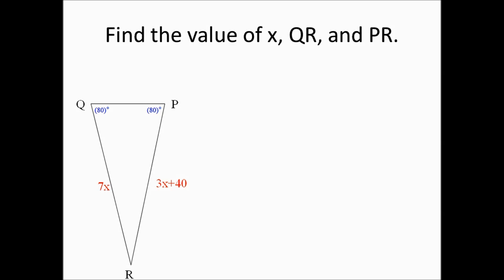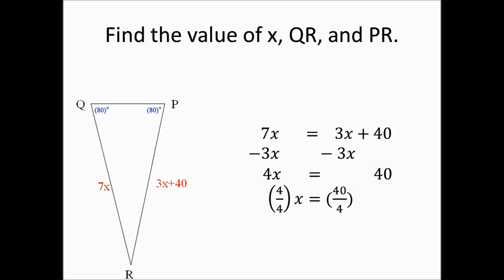Here's an example of the converse of the base angles theorem, which tells us that if two angles are congruent within a triangle, then the sides opposite those angles must also be congruent. Therefore, we set 7X equal to 3X plus 40. Subtracting 3X from both sides gives us 4X equals 40. Dividing both sides by 4 gives us X equals 10.